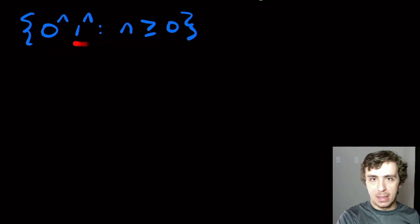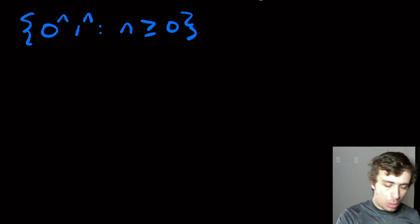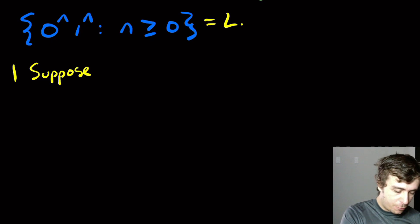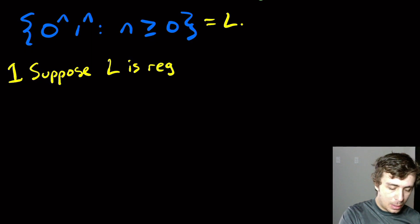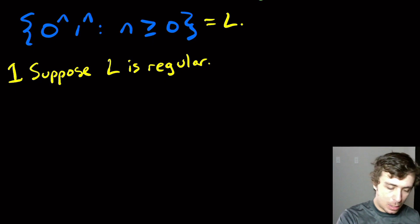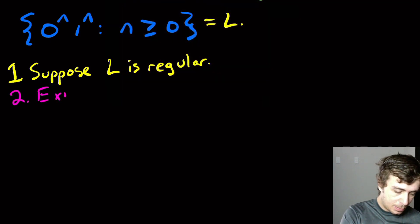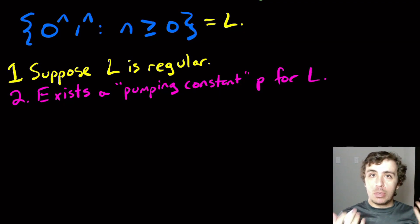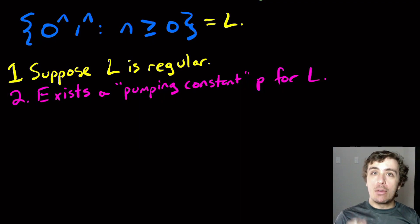Let's prove that this language is not regular. You always start every proof of showing non-regularity by supposing that the language is regular. So let's call this language L. We first suppose L is regular. Then we know there exists a pumping constant P for this language L, which corresponds to a DFA of that particular size.